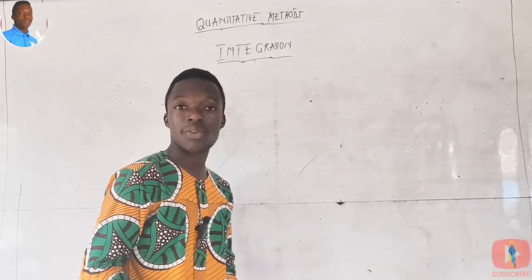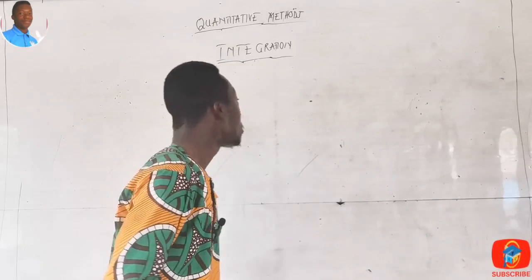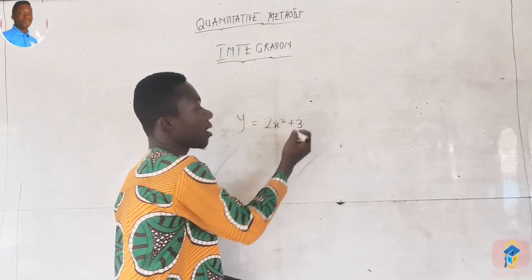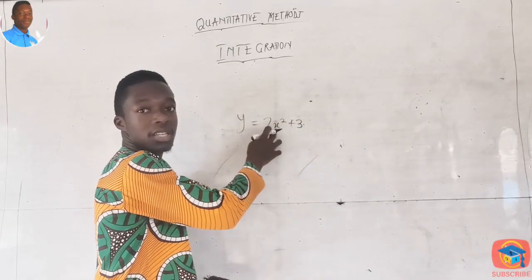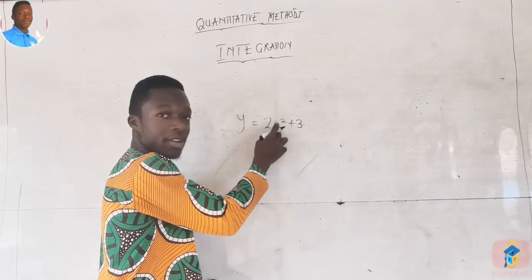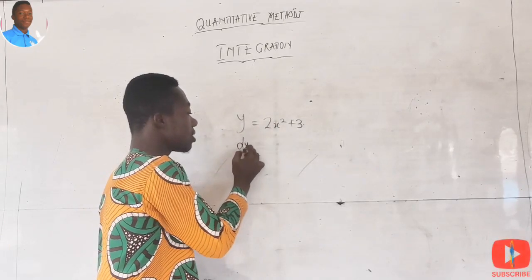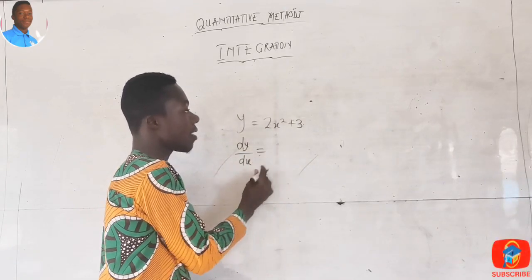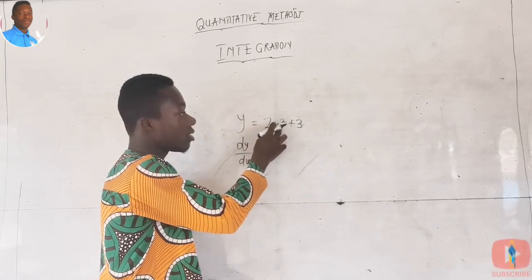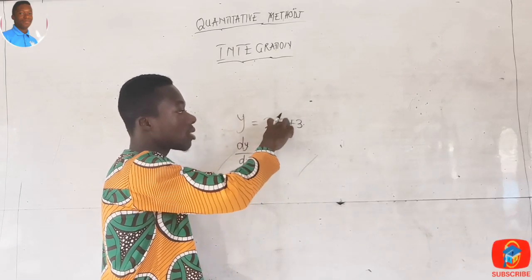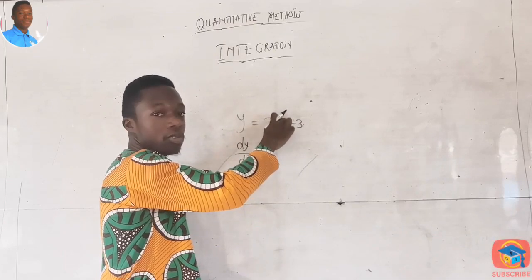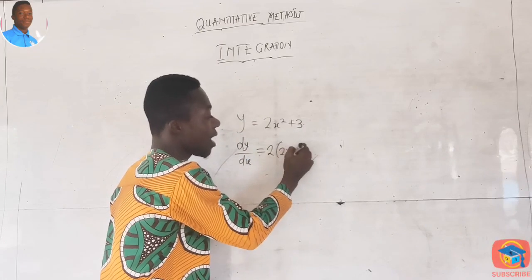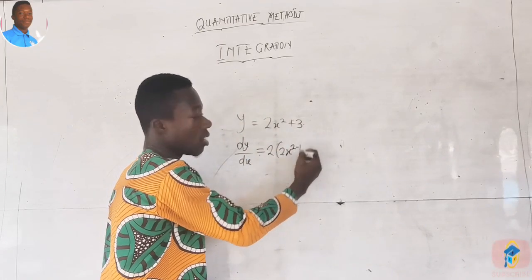Differentiation is the process of finding the derivative of a function. Let's say I have a function y = 2x² + 3. To differentiate this function, we differentiate y with respect to x. For the 2x² term, we multiply the coefficient 2 by the exponent 2 and subtract one from the exponent.